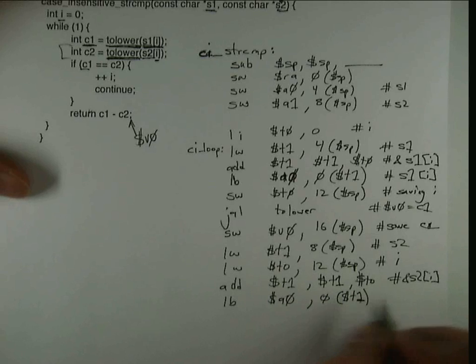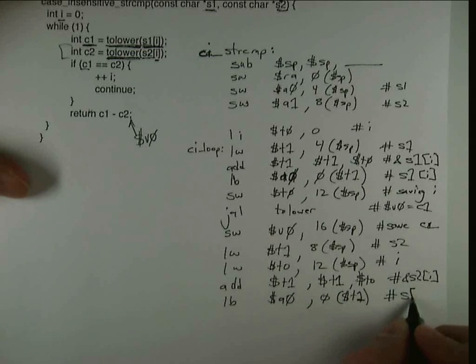And then I can load that value again into A0. Because I know I'm going to very soon call that function, which this is an argument. So that's S2[I].